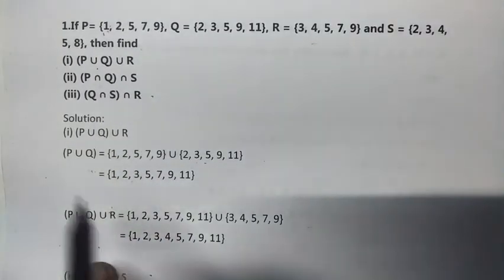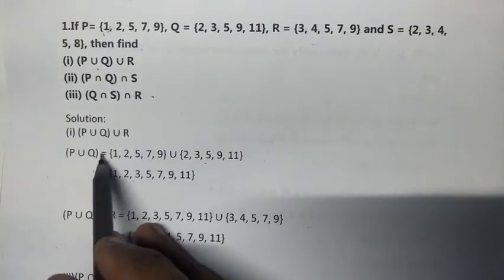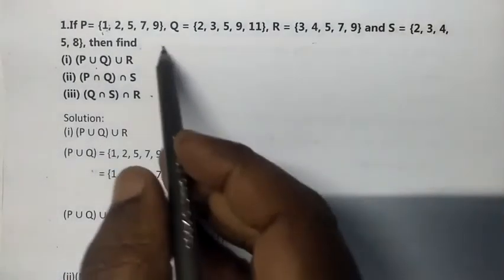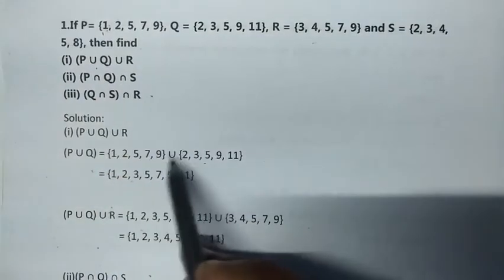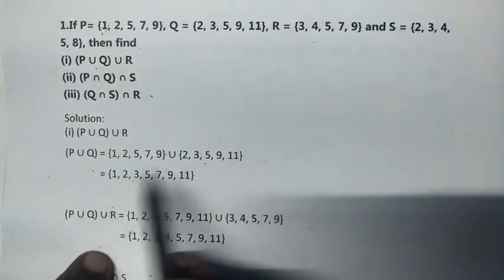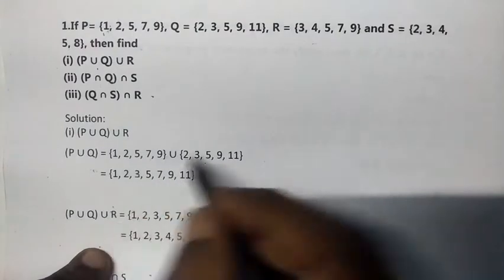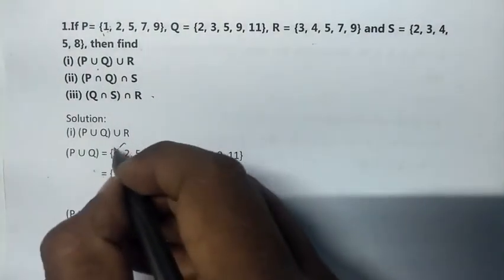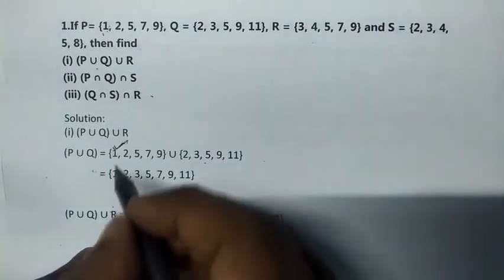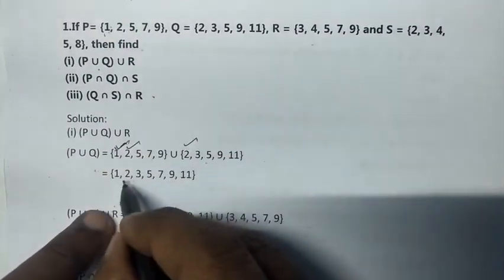First one: P union Q union R. P has 1, 2, 5, 7, 9. Union Q has 2, 3, 5, 9, 11. These are positive numbers, so starting from the least number. One is there, so write one. Next, two is there.